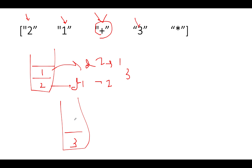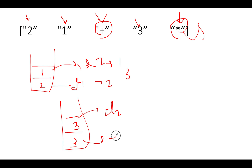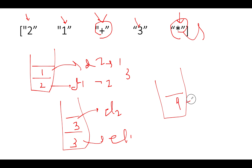Next we have three, which is an integer, not an operator, so we push it. Next we have a multiplication sign, which is an operator. Since we see an operator, we pull out two elements: element two is three, element one is three. Three times three is nine. The stack will hold nine — the result is nine, which is the peek element of the stack.